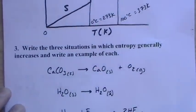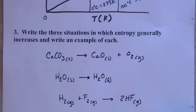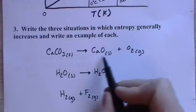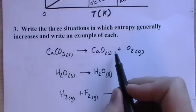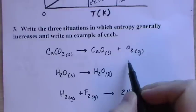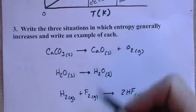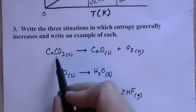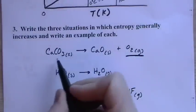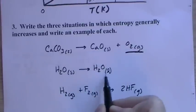There are three situations in which entropy generally increases. First, a reaction in which a molecule breaks up into two smaller molecules — for example, a formula unit breaking into a formula unit plus a gas. Second, a reaction in which there is an increase in moles of gas. Formation of a gas where no gas existed on the other side is definitely an increase in entropy.